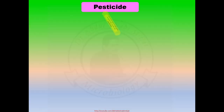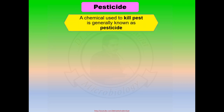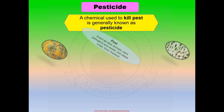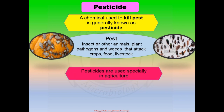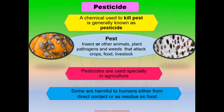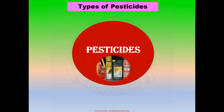What is a pesticide? A chemical used to kill pests is generally known as a pesticide. What is a pest? A pest includes insects or other animals, plant pathogens, and weeds that attack crops, food, and livestock. Pesticides are used especially in agriculture crops. Some pesticides are harmful to humans either from direct contact or as a residue on food.